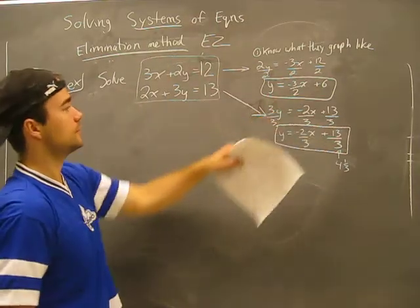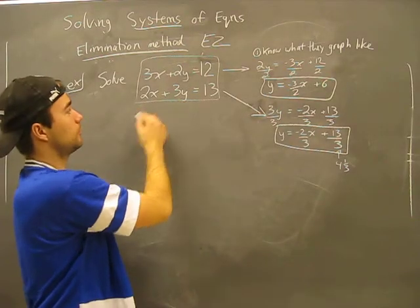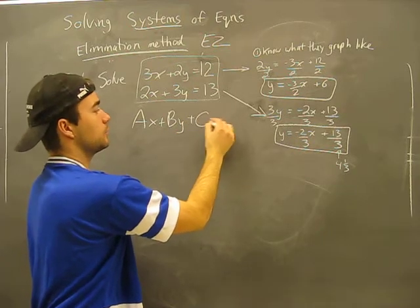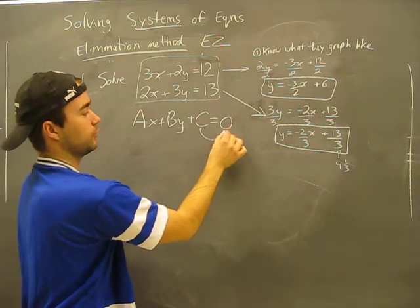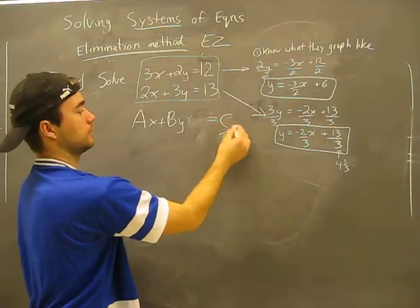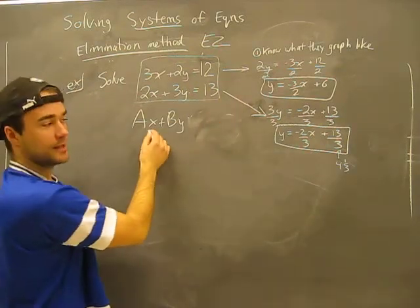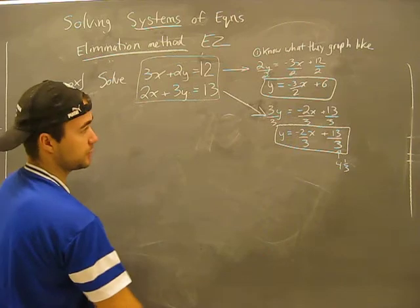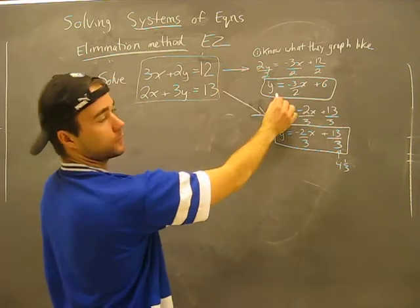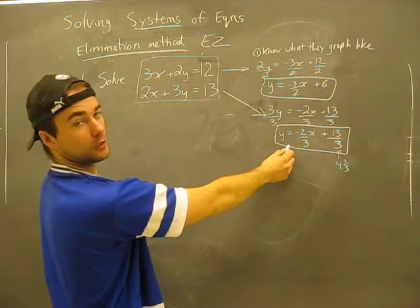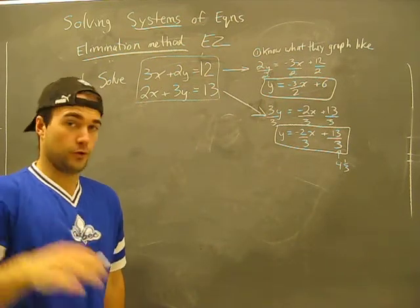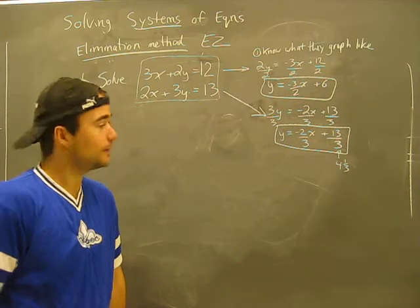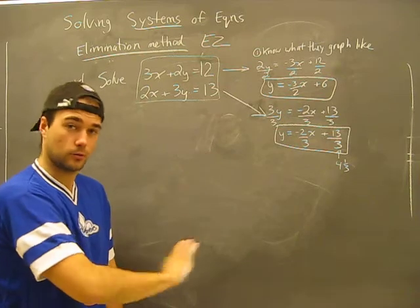All the stuff on the board is what I said — these are called standard form, right? We have AX plus BY plus C equals zero, except the C here I've moved to the other side. No big deal. Standard form — I converted it to slope-intercept form: Y equals MX plus B. So this is what both equations would look like in Y equals MX plus B. I did that so we can get an idea of what the graph would look like.